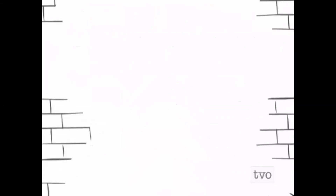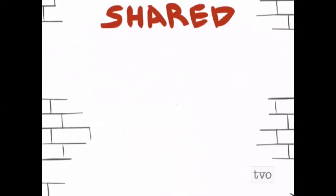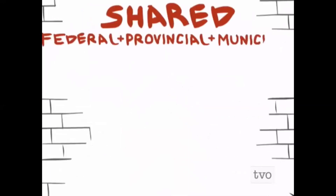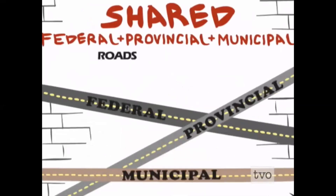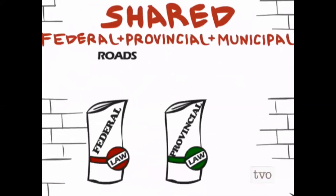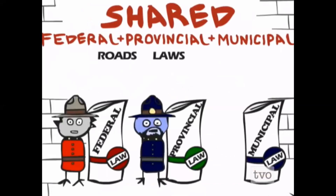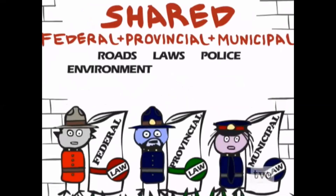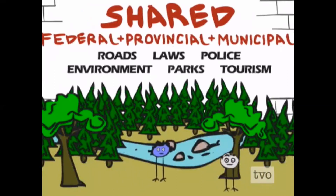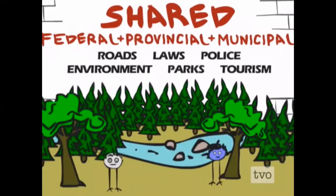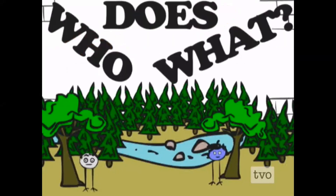Some responsibilities are shared between all three levels of government. For example, transportation has federal, provincial, and municipal components. There are also federal, provincial, and municipal laws, and three levels of police. Environment, parks, and tourism are other areas shared across the three levels of government.